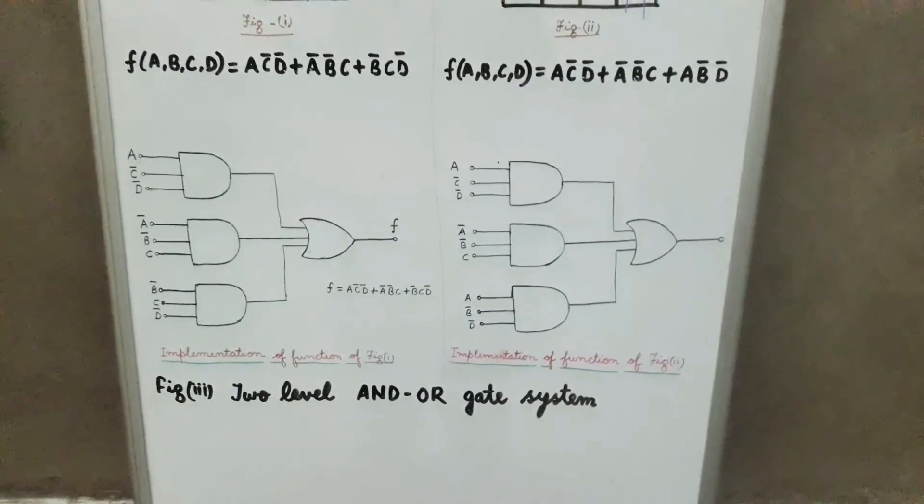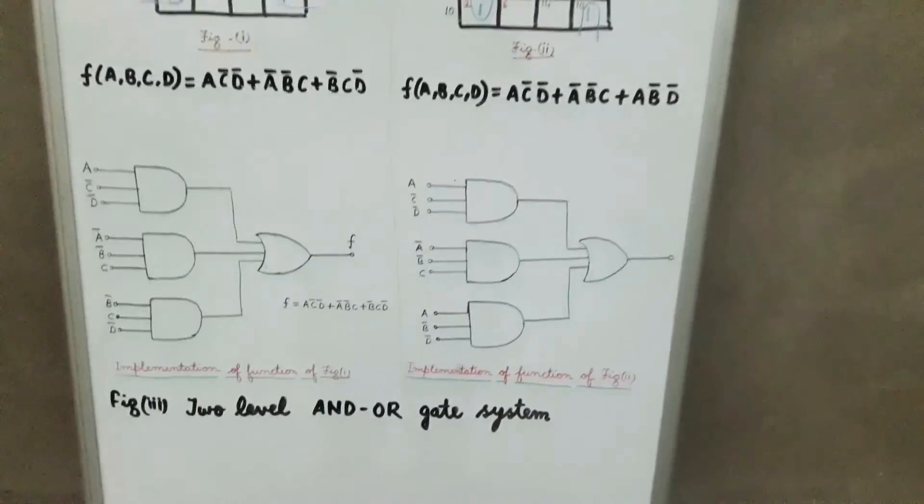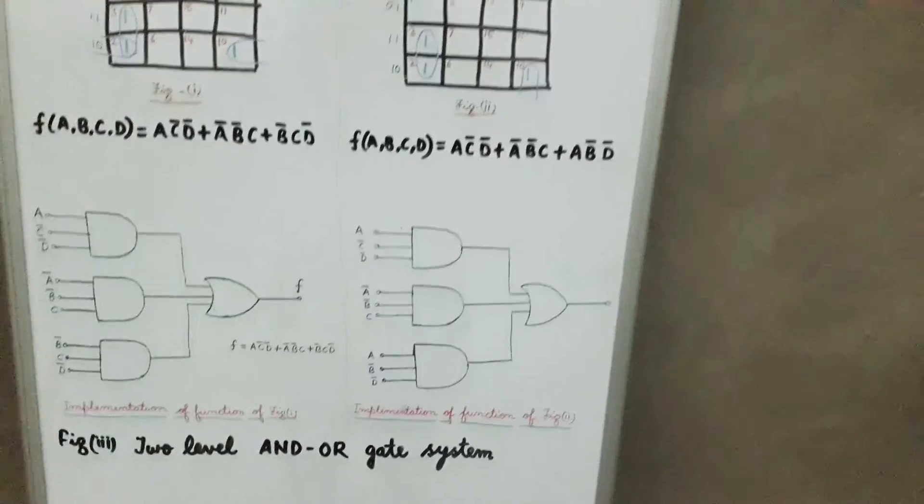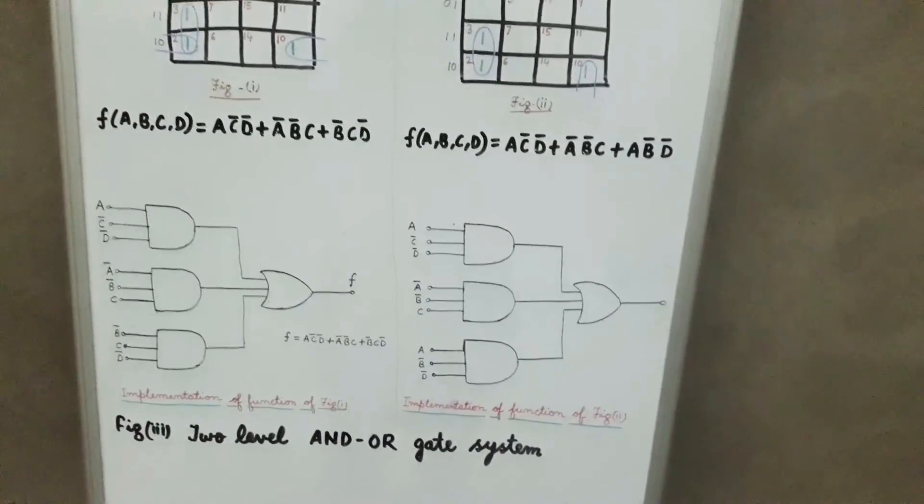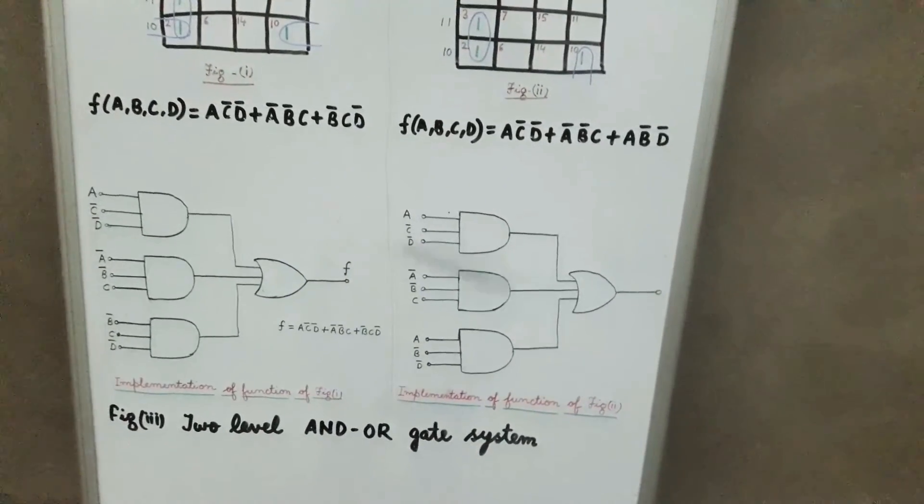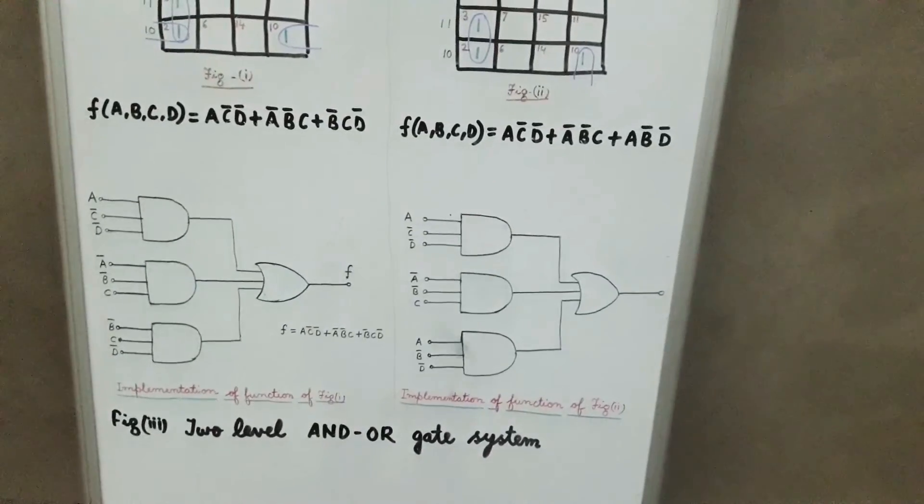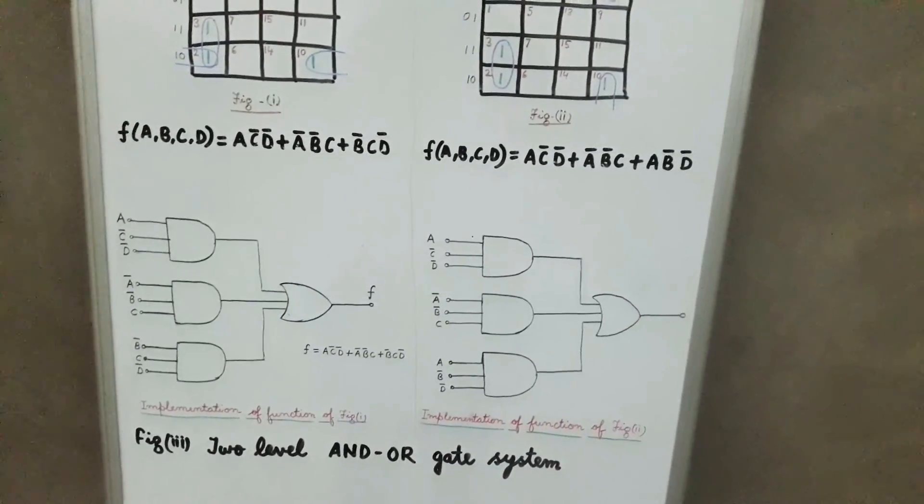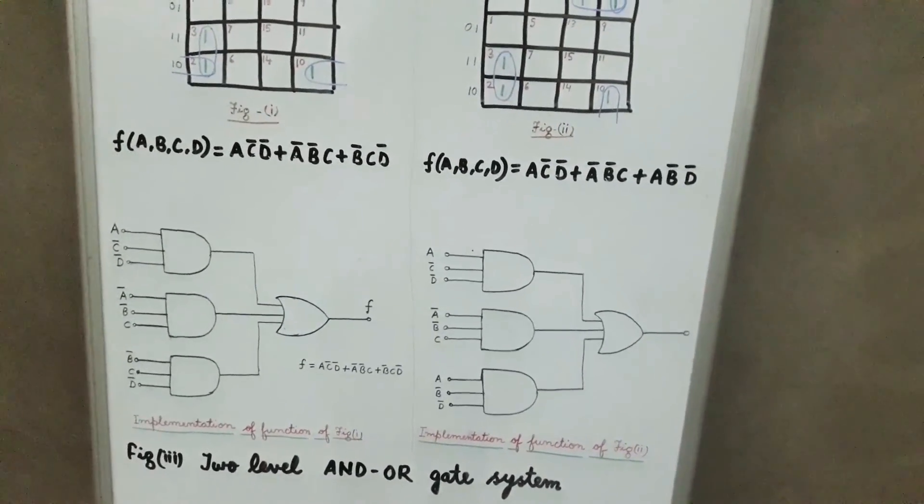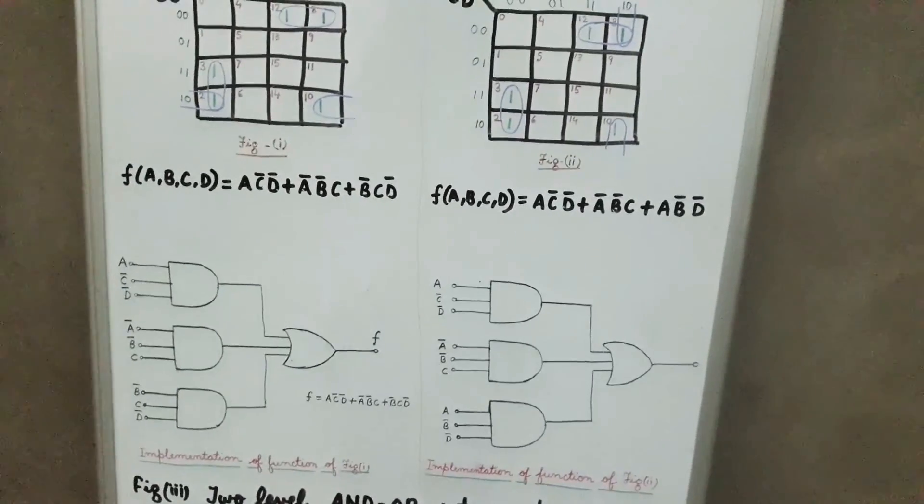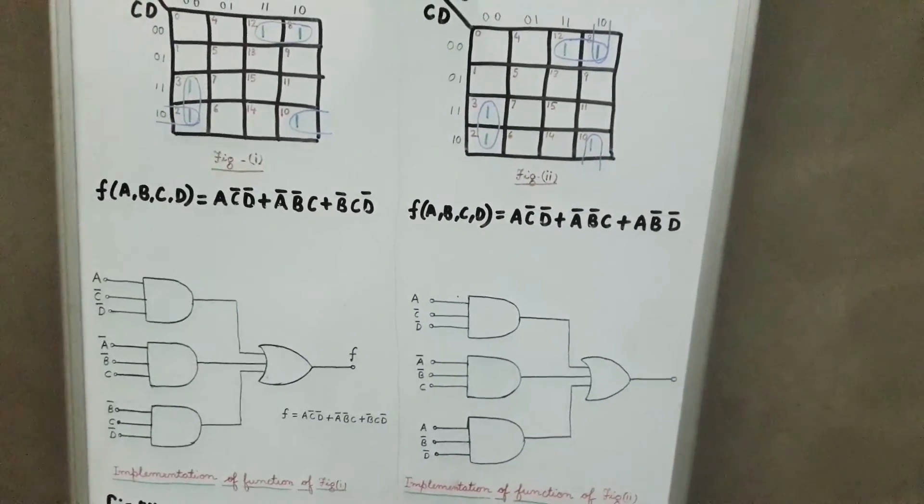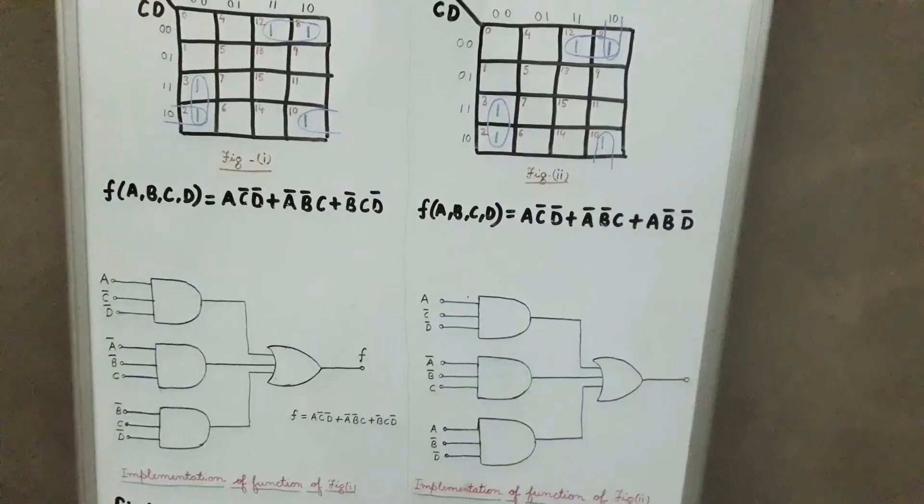Similarly, if we synthesize a given function in the product of sums form, we will again arrive at a two-level OR-AND structure where the input gates are OR gates and the second level is an AND gate.